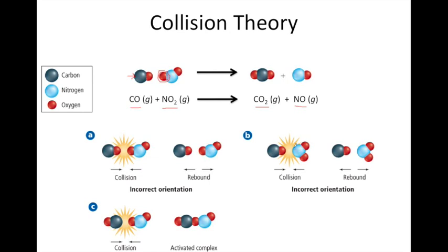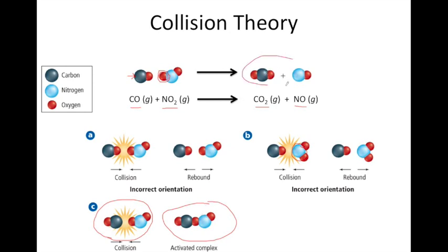If the nitrogen on our NO2 collides with the oxygen atom, again we won't have the correct orientation. The correct orientation would look something like this, where the oxygen atom on our NO2 collides directly with our carbon atom so they form a chemical bond. This forms something called an activated complex or a transition state, where you're beginning to form the new bonds that the products need and beginning to break the old bonds between the reactants. This transition state would then decompose or break apart to form our products.